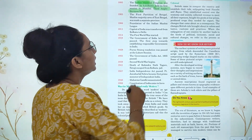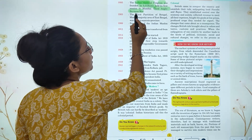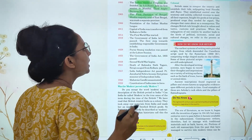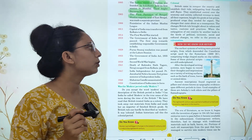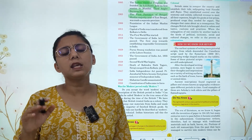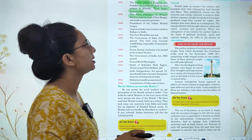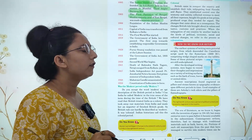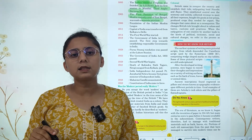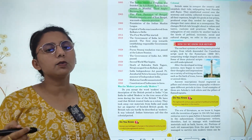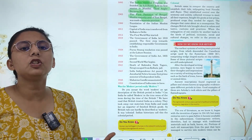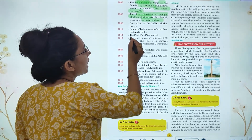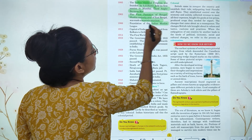In 1905, there was the first partition of Bengal. A Muslim majority area was made in East Bengal as a separate province. In 1906, the Muslim League was formed, and in 1911, the partition of Bengal was reversed.